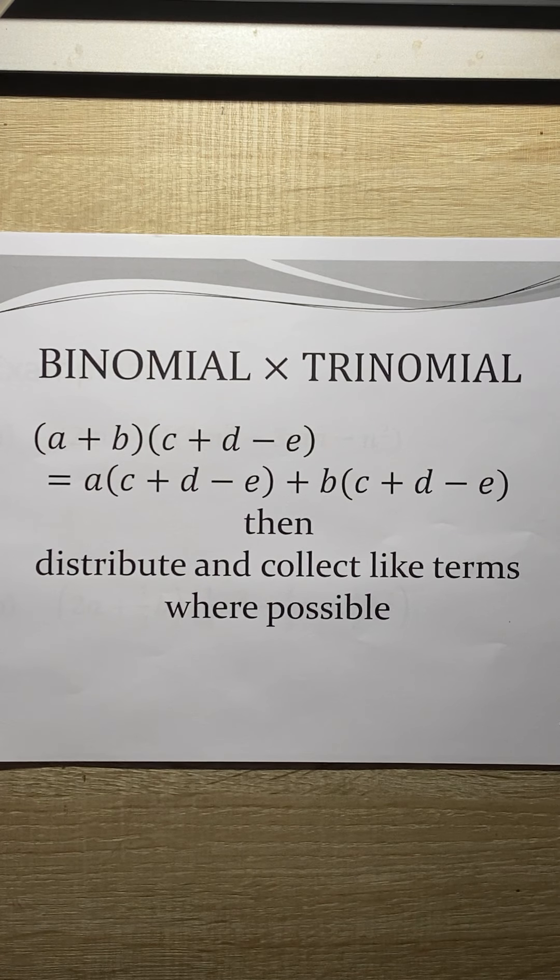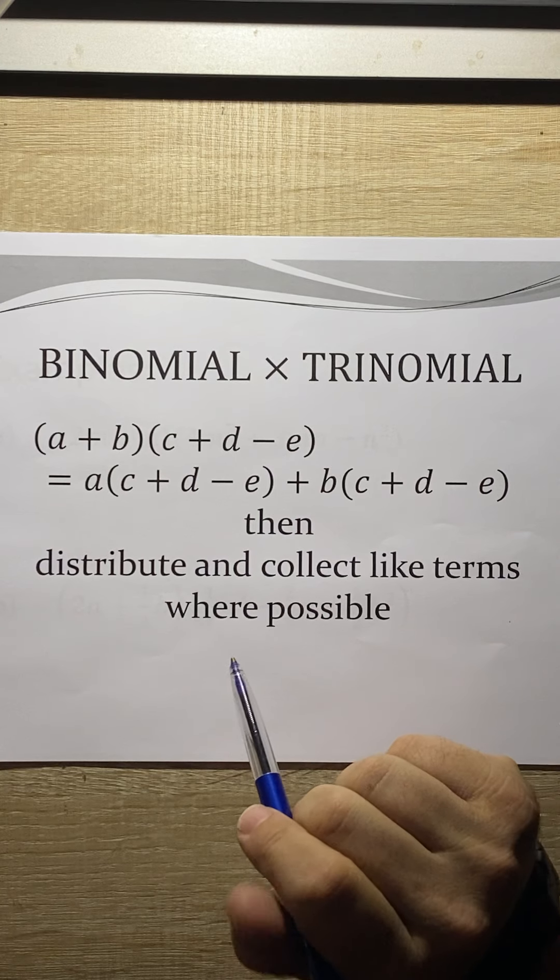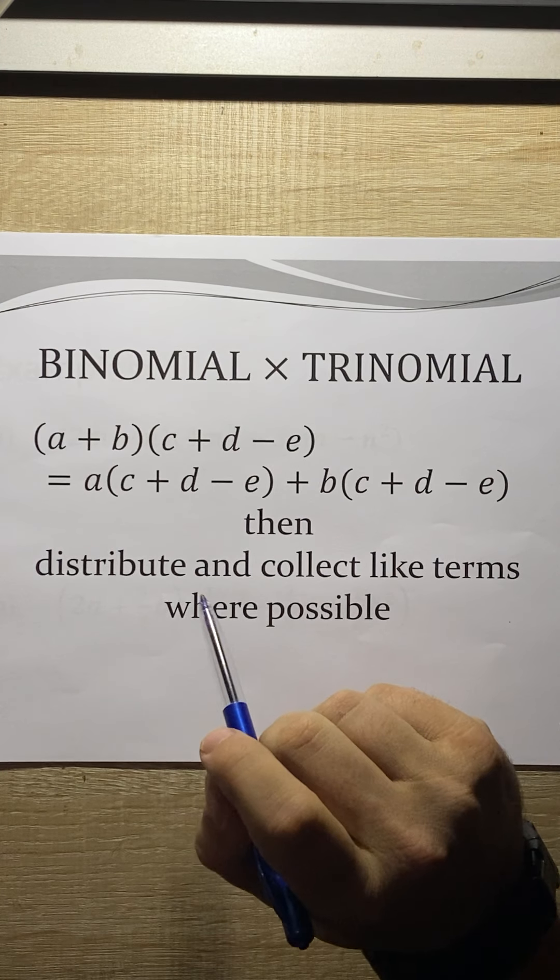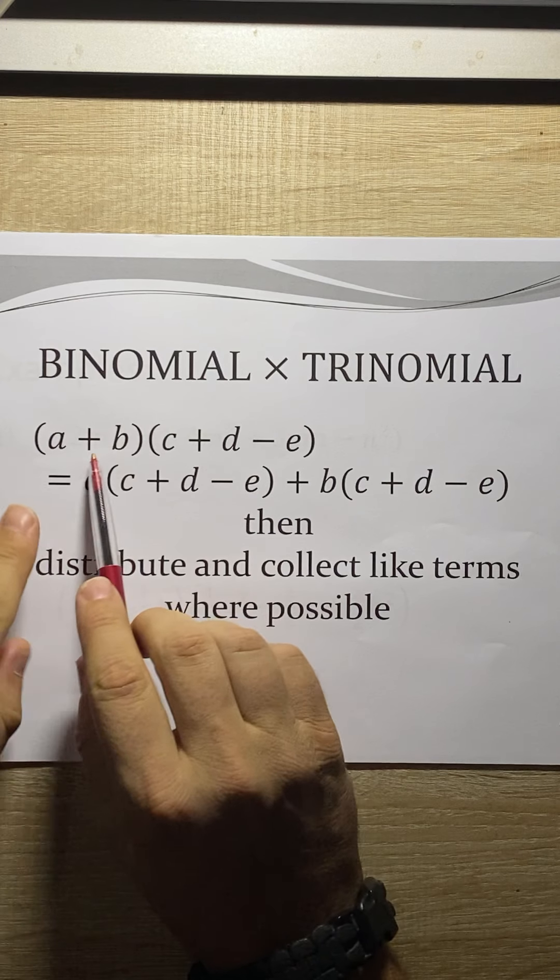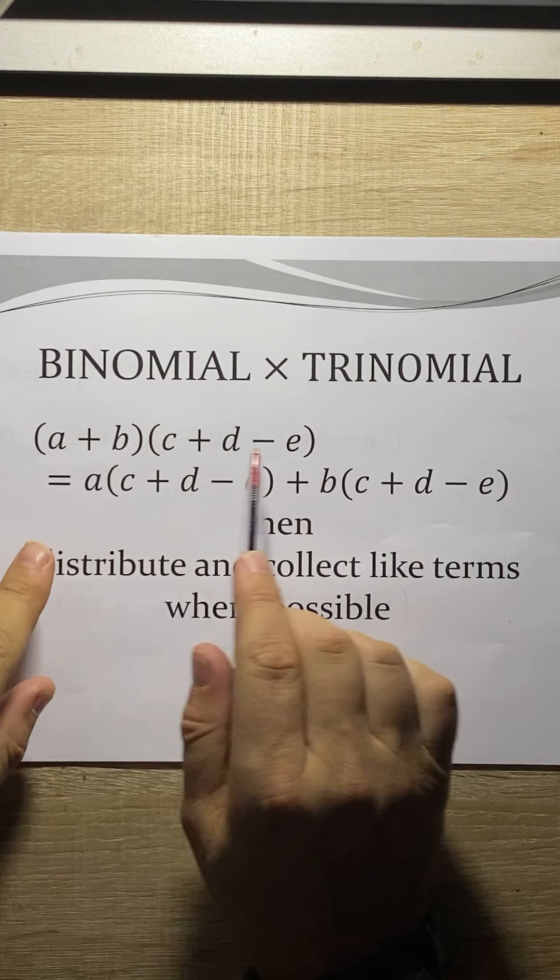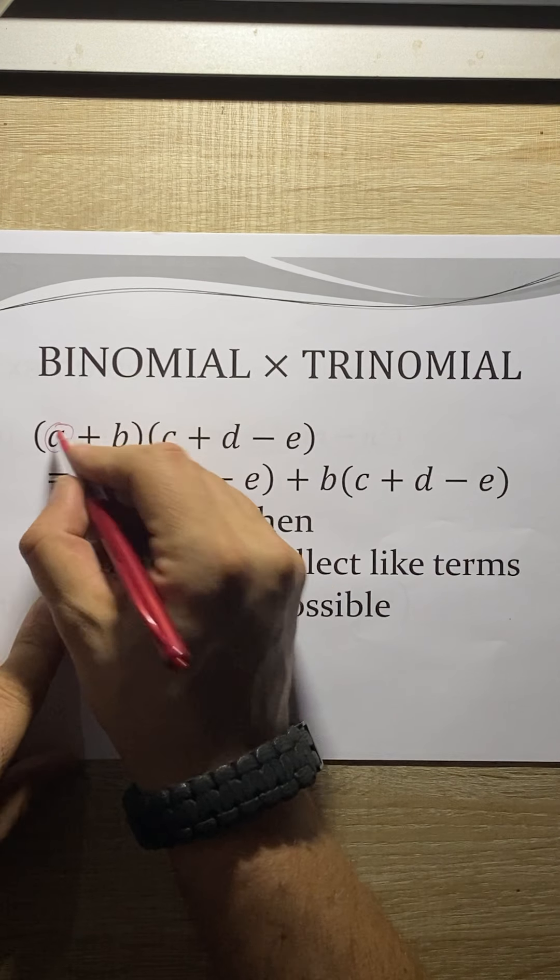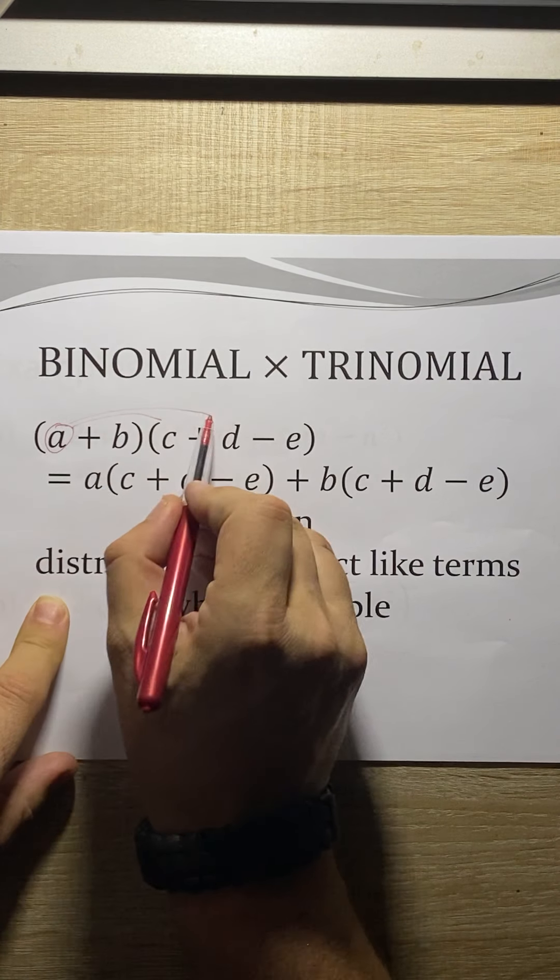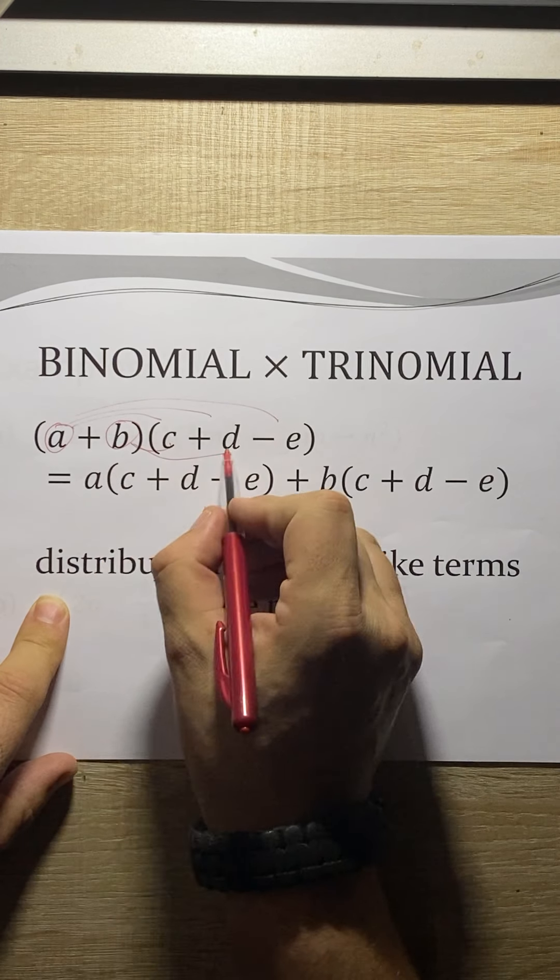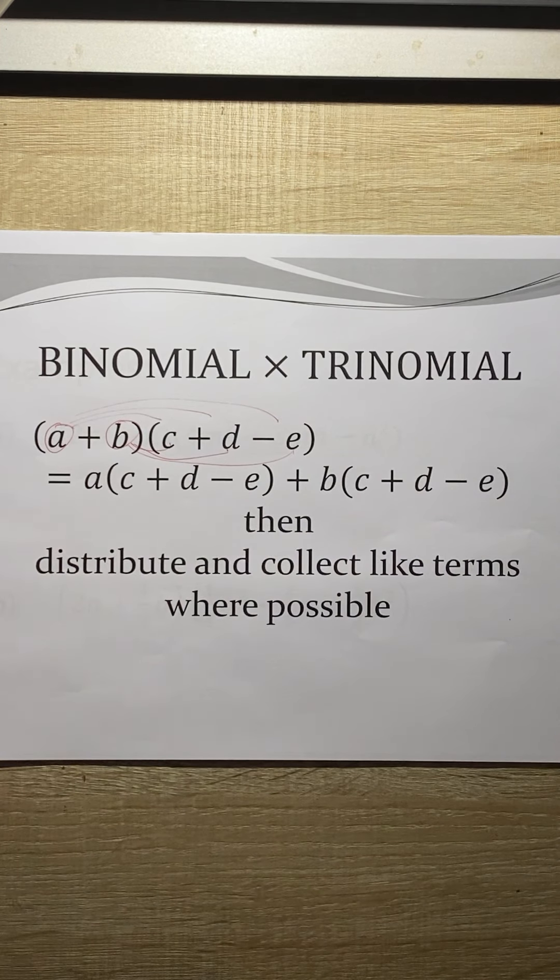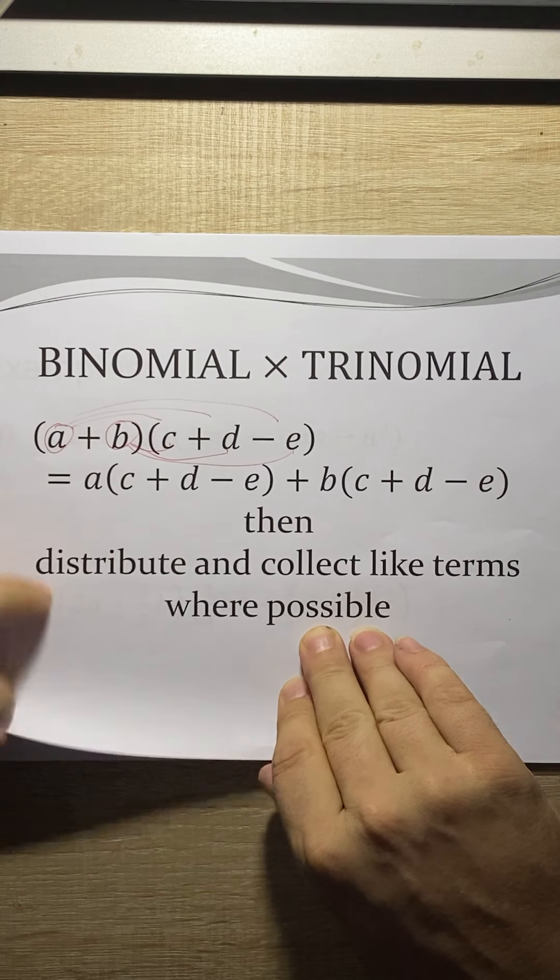That was a great tense. Today we're going on to binomial by trinomial. So basically what we're going to do, the method that I want you guys to do is, if you have a two-term bracket multiplied by a three-term bracket, you're going to take this first term, distribute it into each one there, and then you're going to take this term, distribute it into each one like that. So let's go through an example and we can see how this works.